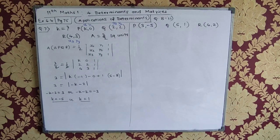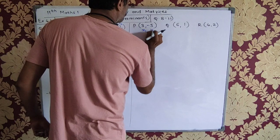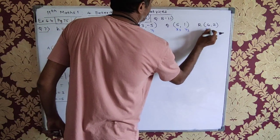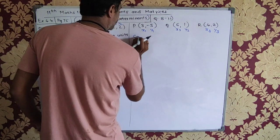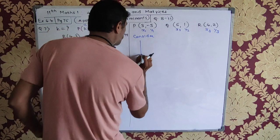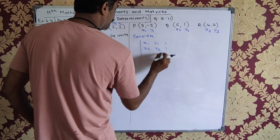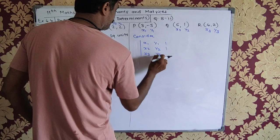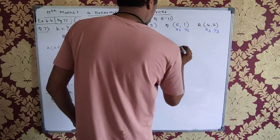Question number 8.2. It says, examine the collinearity of the following set of points. We have to check whether these points are collinear. So let me call this as x1, y1, x2, y2 and x3, y3. And if these points are collinear, then we will consider the determinant x1, y1, 1, x2, y2, 1, x3, y3, 1. And if this is 0, then we will have collinearity.